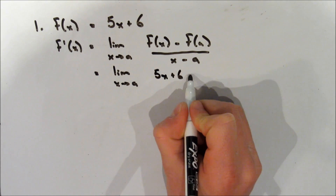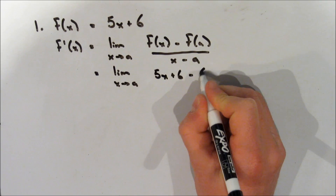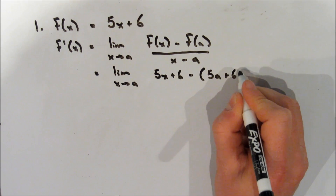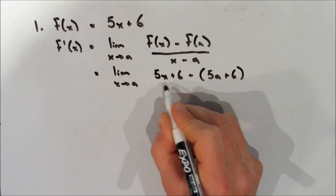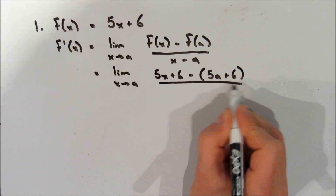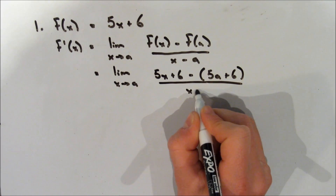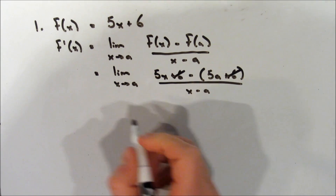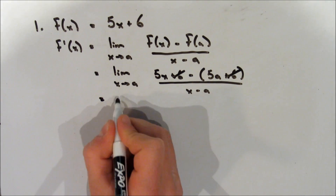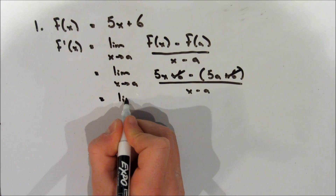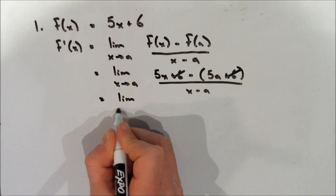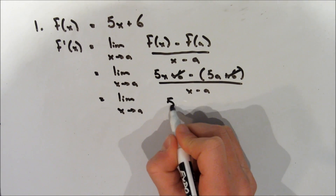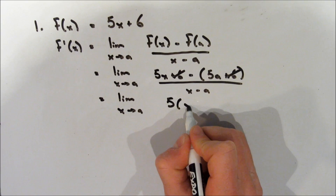So f(x), we're going to write out our function: 5x plus 6. And now we're going to subtract f(a), which we just sub in a every time there's an x in f(x). All of that is over x minus a. As you can see, those two sixes cancel out, so we don't have to worry about them anymore.